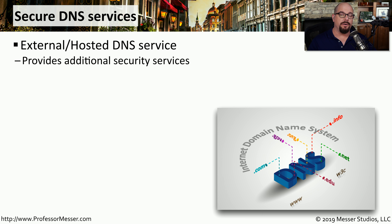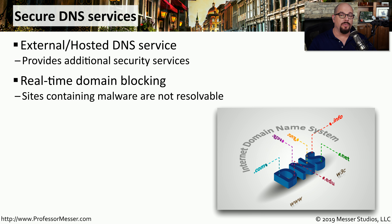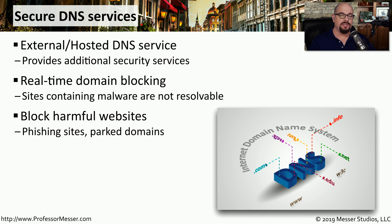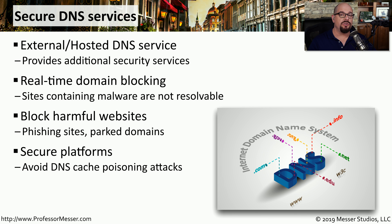Another useful tool for blocking malware is to have a secure DNS that is specifically designed to watch for anyone visiting a known malware site. This provides blocking services for someone who may inadvertently try to visit a known bad website. If anyone tried to resolve the IP address of a known bad site, that address would come back as unresolvable and your system would not be able to visit that site. The database on this secure DNS service would constantly be updated, and as known bad malware sites and parked domains became known, it would block those as well. This DNS service also runs on a very secure platform, preventing someone from gaining access to the DNS server directly and poisoning the DNS records.